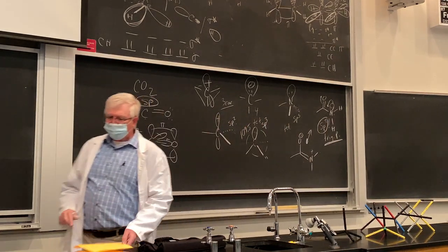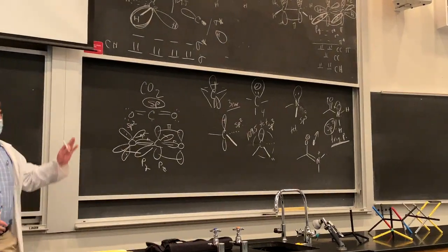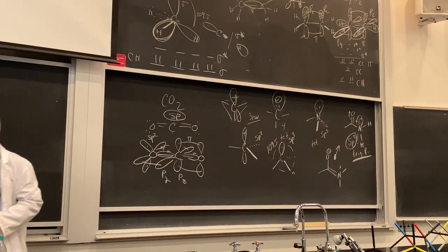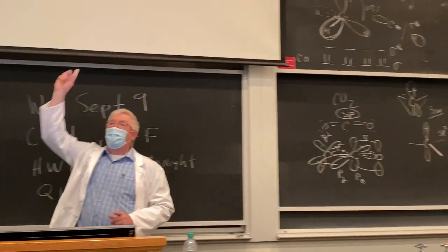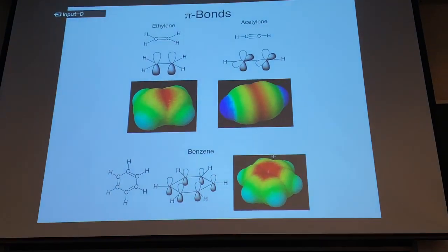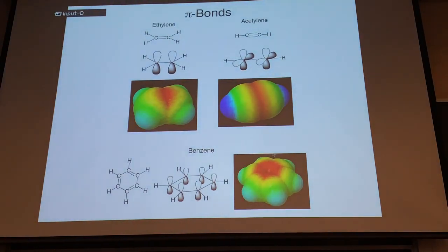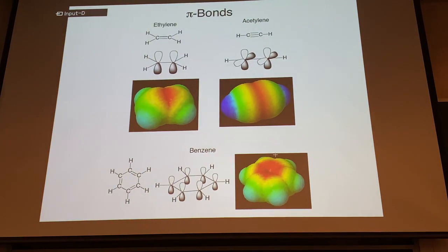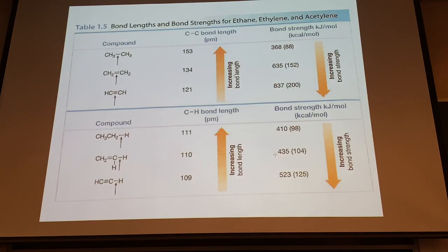Let's go back to the slides. There are our potential energy and electrostatic potential energy diagrams. Bond lengths and bond angles — hybridization affects bond lengths. The shortest bonds have higher bond orders, so a triple bond is actually shorter. These are in picometers — a picometer is 10⁻¹² meters. 121 picometers is 1.2 angstroms, shorter than ethane's 1.53 angstroms.